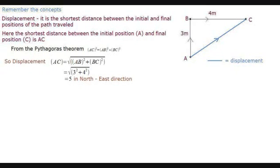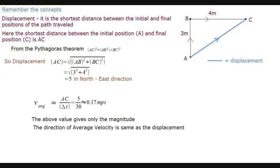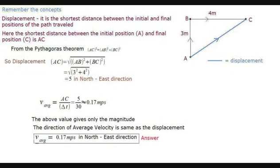Displacement is a vector quantity. Its direction is the direction of the vector AC, which is northeast. Putting the value of displacement in the formula of average velocity gives V average equals displacement divided by total time, which equals 5 divided by 30, which equals 0.17 meters per second. The direction of average velocity is the same as that of displacement, since time is a scalar quantity. Therefore average velocity equals 0.17 meters per second in northeast direction.